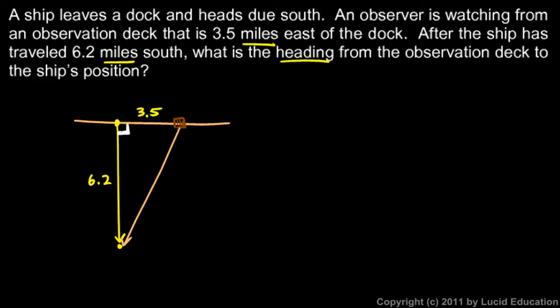So we can, in this case, we know the two legs of the right triangle. We can use the tangent function, and let's call this angle theta, and we can say that the tangent of theta is going to be the opposite divided by the adjacent. So the tangent of theta is going to be 6.2 over 3.5.